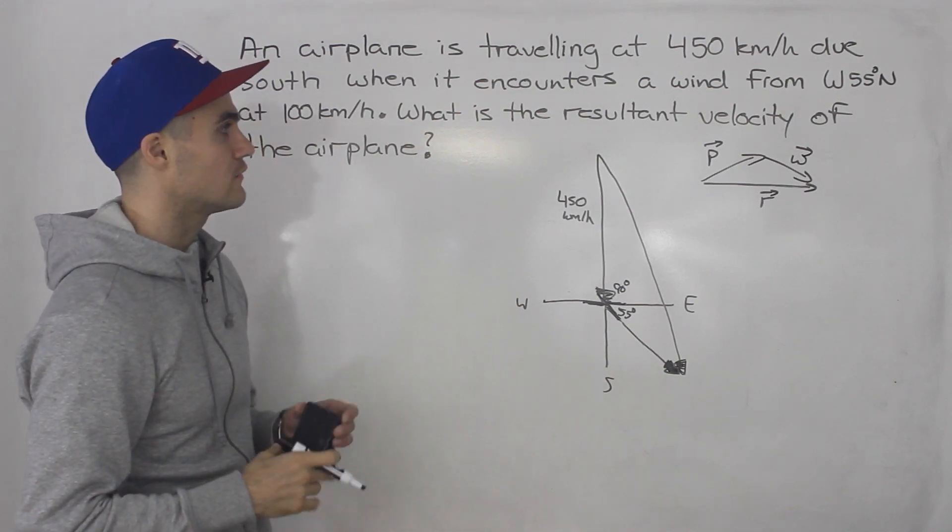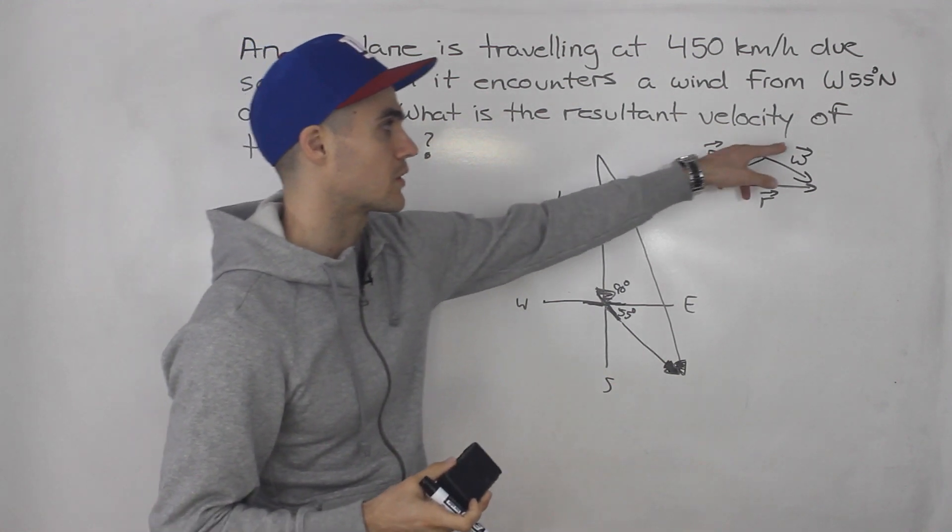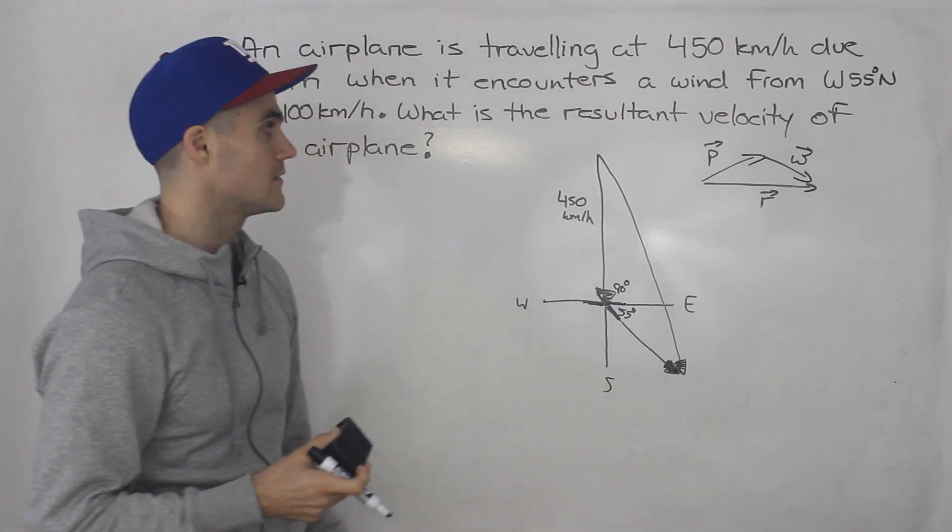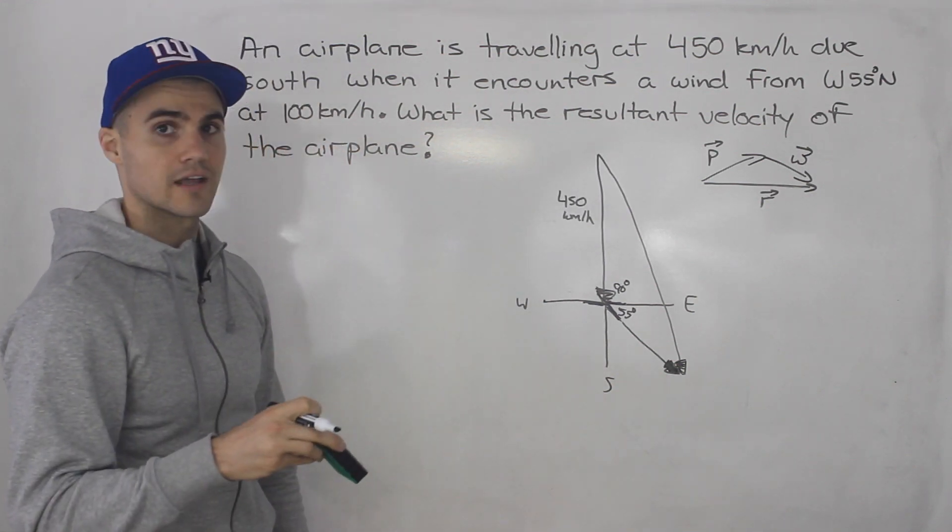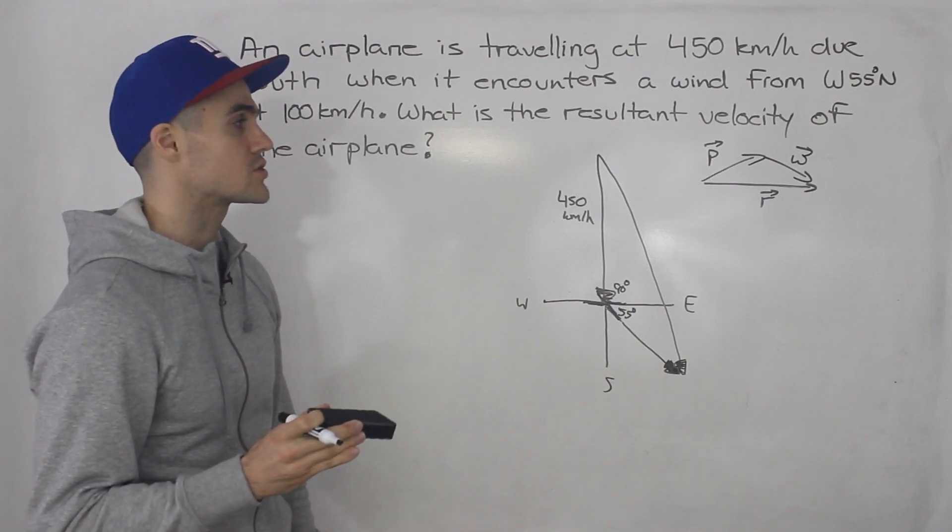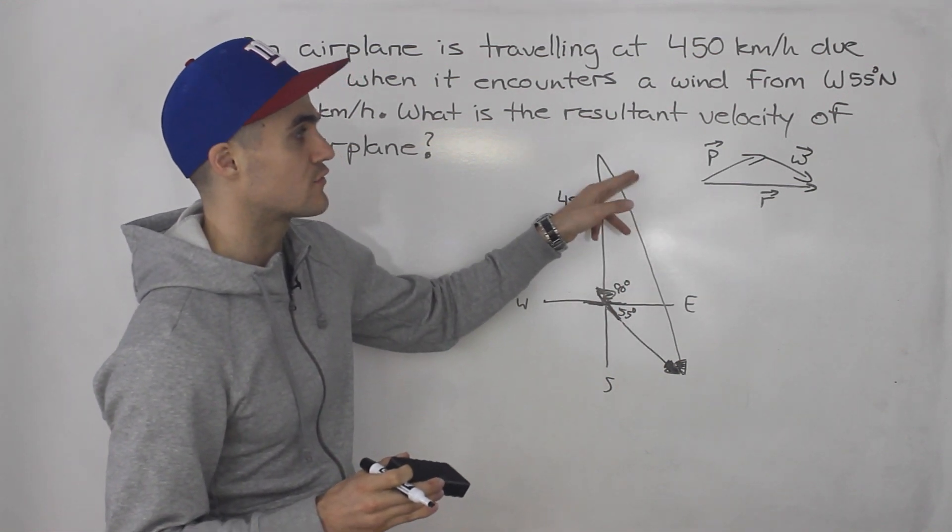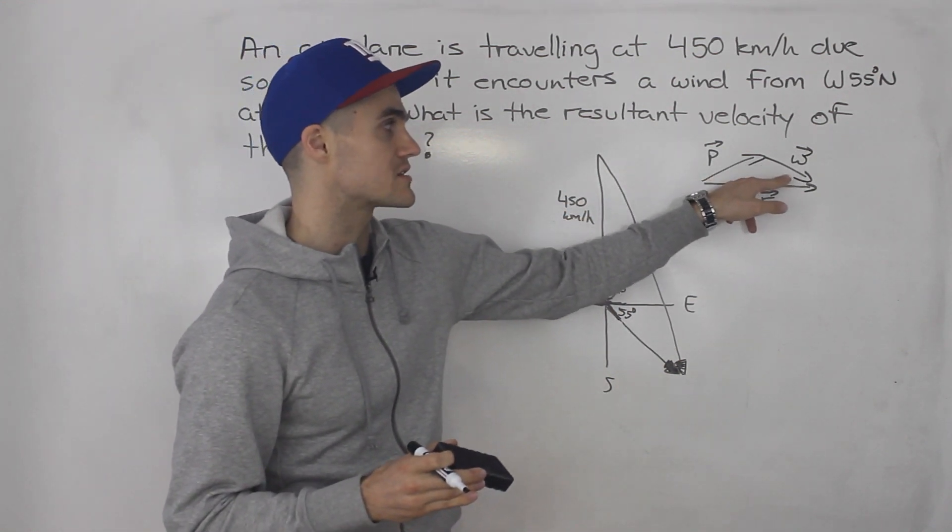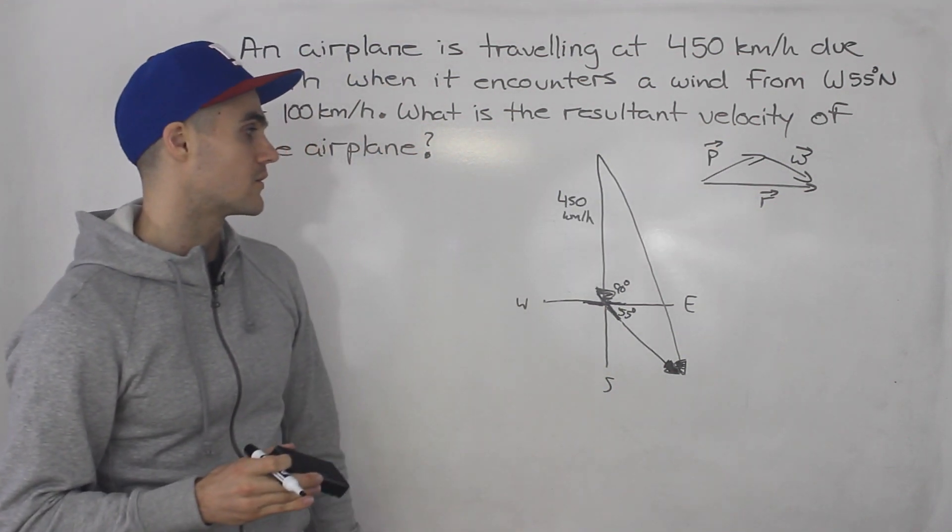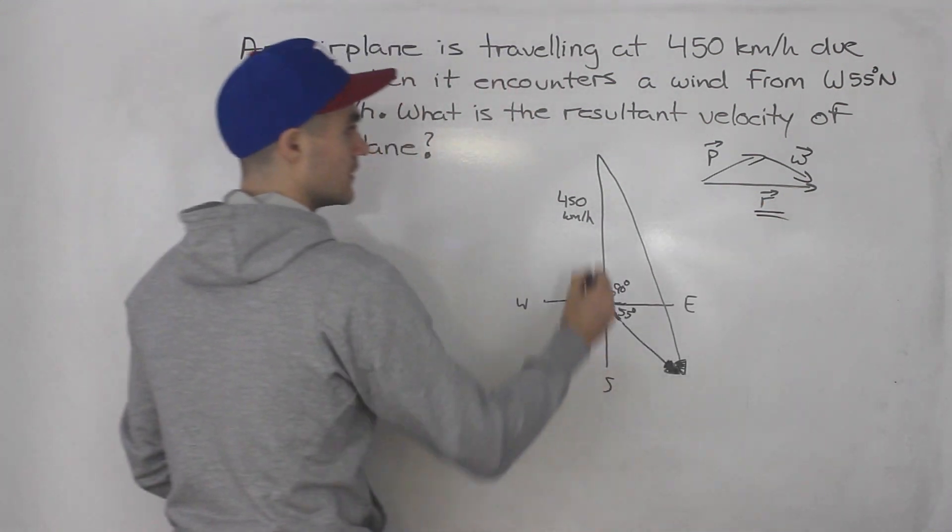Alright, so with these types of questions, always be aware of what they are giving you and what you're being asked. In this case, we're simply given the plane vector, given the wind vector, we're asked for the resultant vector, the resultant velocity. Sometimes you're asked for different things, sometimes you're asked for the wind velocity or the wind direction or which direction does the plane have to fly, right?